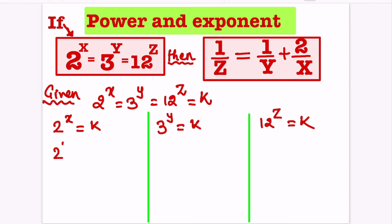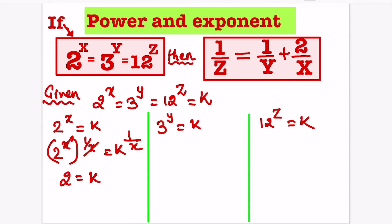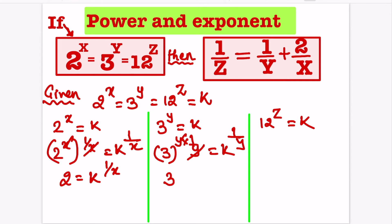Now, raising it to the power 1 by x, we will get k raised to 1 by x. So, 2 is equal to k raised to 1 by x. Similarly, 3 raised to 1 by y is equal to k raised to 1 by y, and 3 is equal to k raised to 1 by y.